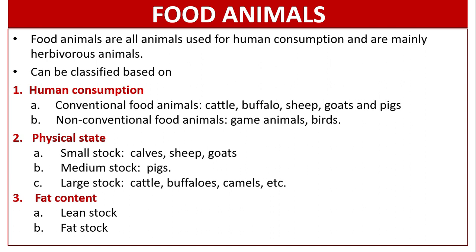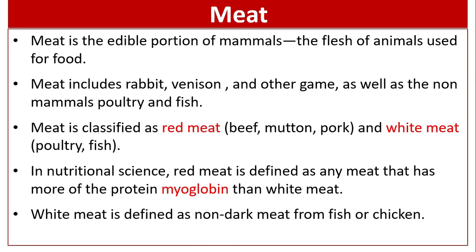Non-conventional food animals like game animals and birds come under this category. Based on physical state: small stock like calves, sheep and goats; medium livestock like pigs; large livestock like cattle, buffaloes, camels, etc. The next category is fat content — lean stock and fat stocks come under fat content.